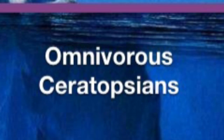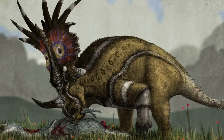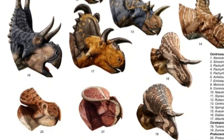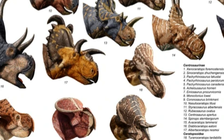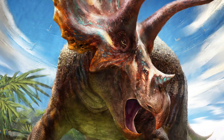Omnivorous Ceratopsians. Everyone knows that ceratopsians were herbivores, but there have been some theories regarding omnivory in the horned faces. After all, some primarily herbivorous animals today sometimes eat carrion when vegetation is scarce, such as hippos. If ceratopsians had sharp hooked beaks and rows of slicing teeth, that could possibly mean they sometimes scavenged as well. It would be quite a surprise to see a herbivorous Triceratops scavenging the remains of a T. rex carcass.